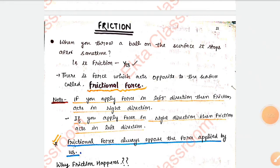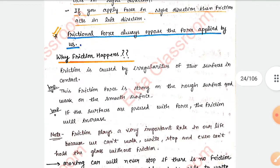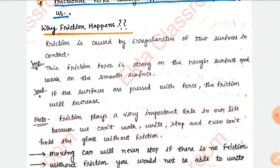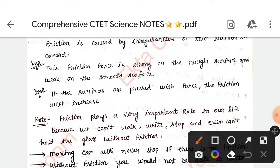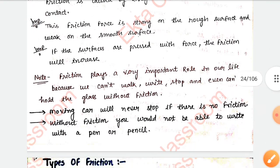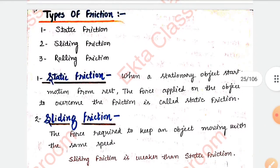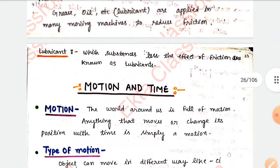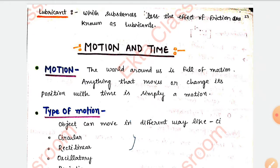If we talk about friction, which is one of the most important topics in CTET Science — this is the static portion I have covered. I have also mentioned important bullet points. Let me show you: these are the important bullets — this is what you have to read and this is what you have to remember. These are the types of frictions. All topics like motion and time are also covered, from where you can find numericals.